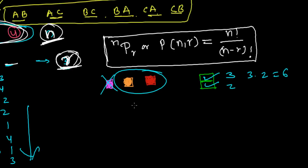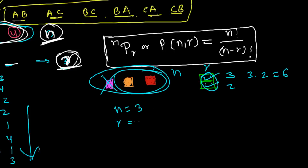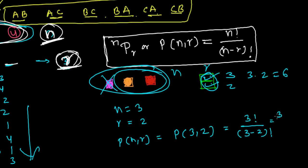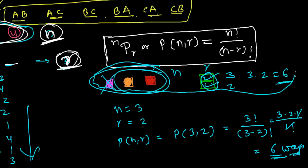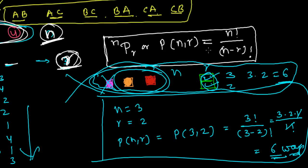Now using the formula: total given colors is n equals 3, and the places to fill is r equals 2. So P(3, 2) equals 3 factorial divided by (3 minus 2) factorial, which is 3 times 2 times 1 divided by 1 factorial. That simplifies to 6. From both methods we get 6. Initially we needed the fundamental principle of counting, but now we can directly use the formula. In the next video I'm going to prove how this formula is derived — you must watch that video, it's very important.